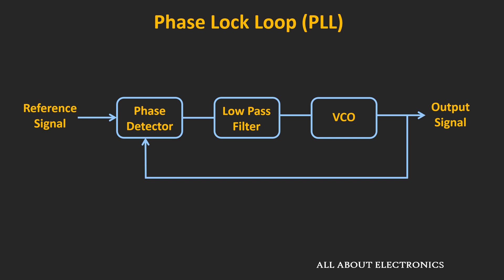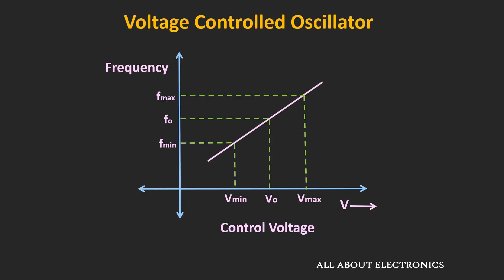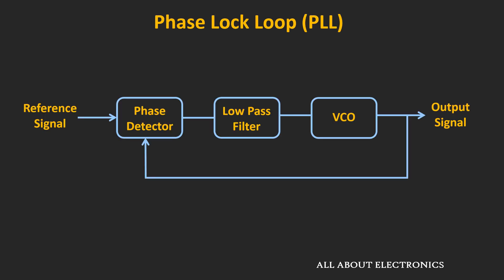The phase locked loop consists of three basic blocks: the phase detector, the loop filter or low-pass filter, and the voltage-controlled oscillator. We have already discussed the low-pass filter and the VCO in earlier videos. In the voltage-controlled oscillator, as the control voltage changes, the frequency of oscillation also changes. Whenever the loop is just turned on, the VCO runs at the center frequency, also known as the free-running frequency.